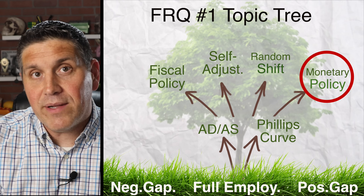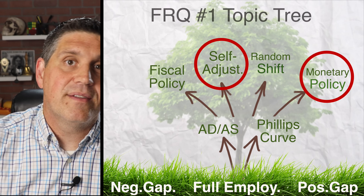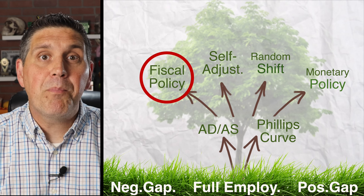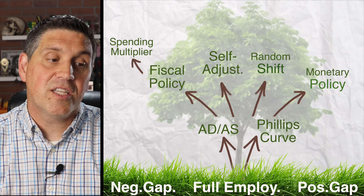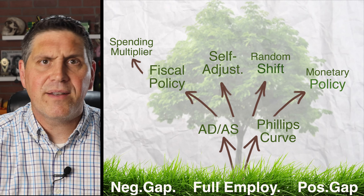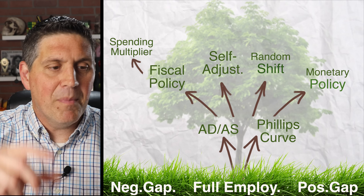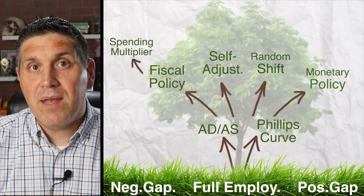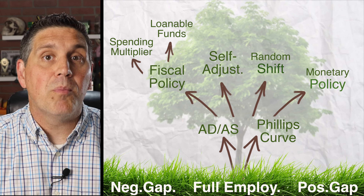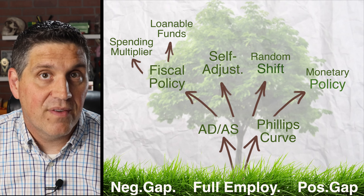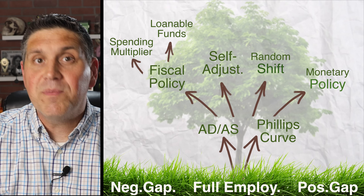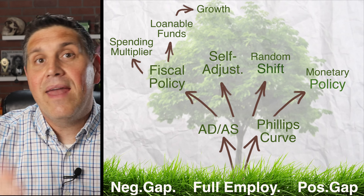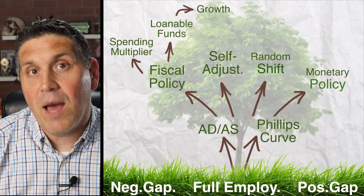If they ask you about fiscal policy, they usually branch out into one of two things: either the spending multiplier — telling you the marginal propensity to consume and how much money needs to be spent to close a gap — or how deficit spending can affect the loanable funds market and make you draw that graph. Most of the time when they have you draw the loanable funds market, they connect that to higher interest rates and crowding out and how that affects economic growth.